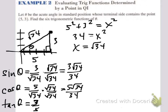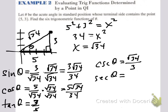Now we find the reciprocals. The reciprocal of sine is cosecant of theta — that's the square root of 34 over 3. The reciprocal of cosine is secant of theta — that's the square root of 34 over 5. And cotangent is the reciprocal of tangent — that's 5 over 3. And there are your 6 trig functions of theta.